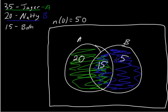So that totals up to 40. So I'm going to write that up here. You have a total of 40. Okay, we know that there are 50 in our sample space altogether, 50 in our universal set. So obviously there's a difference of 10 there.